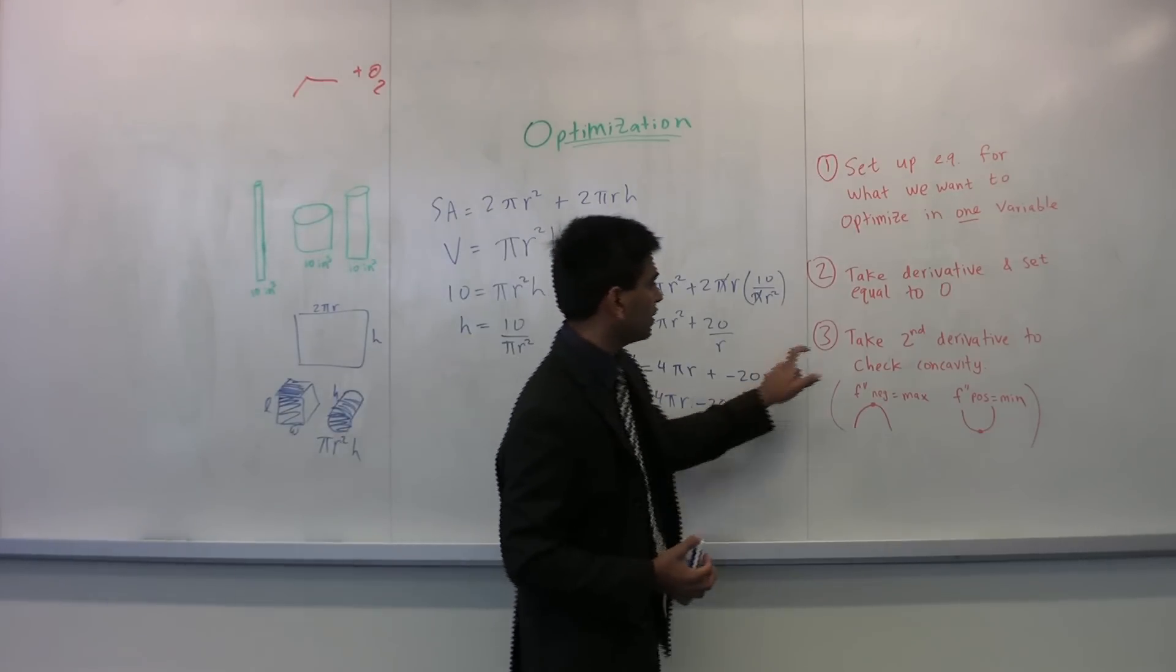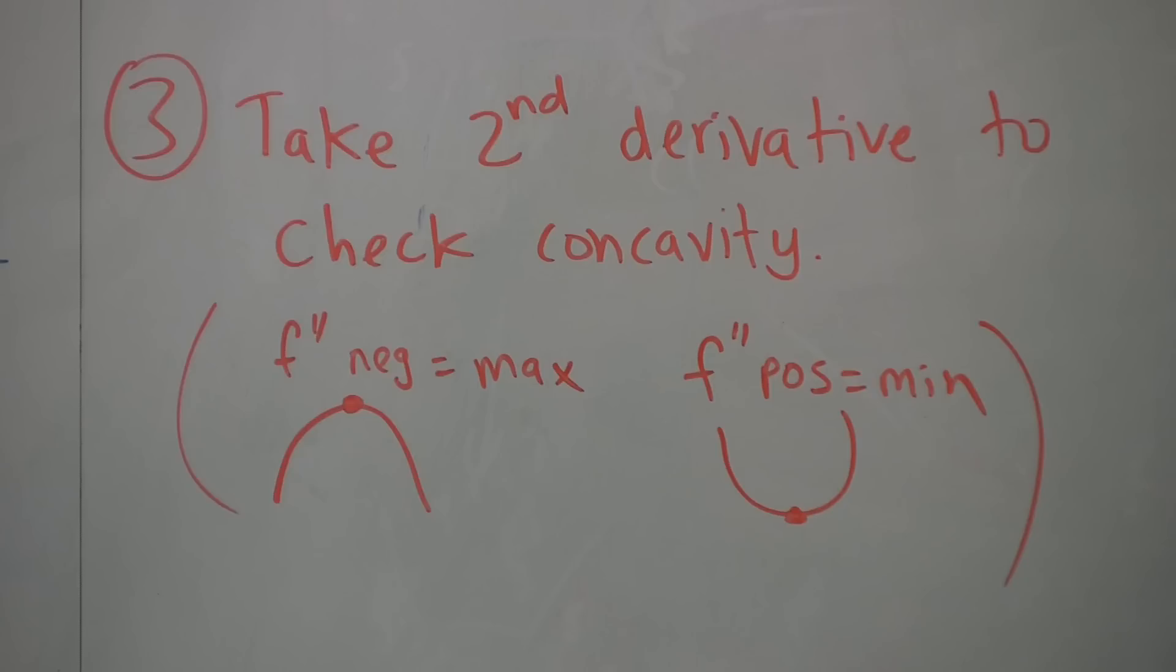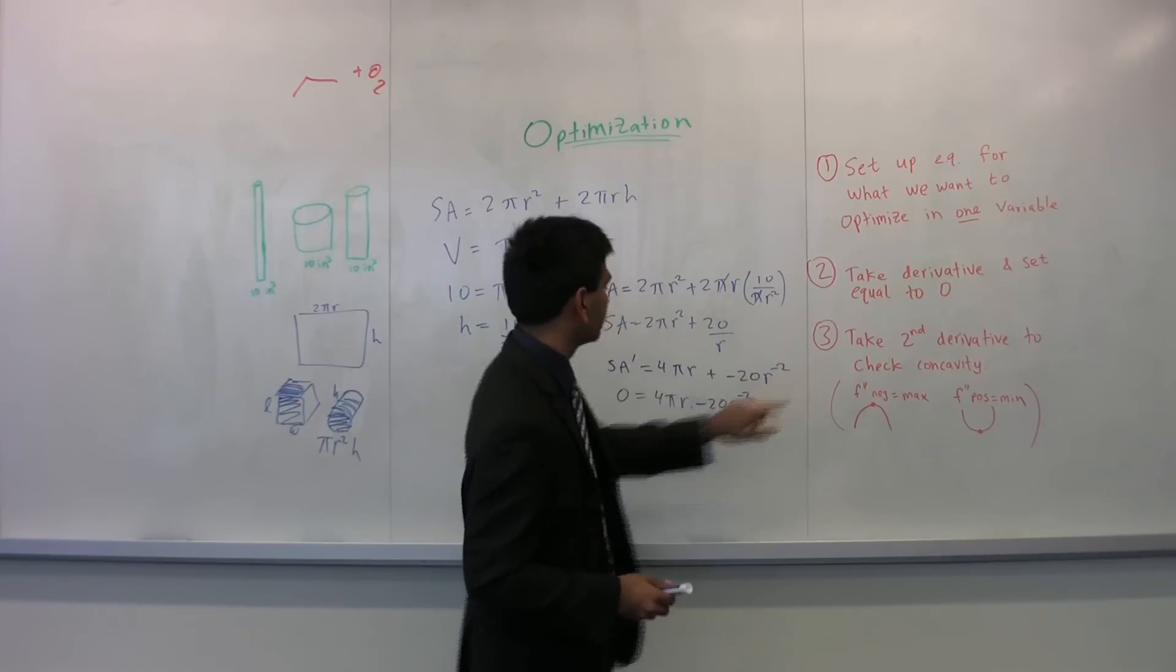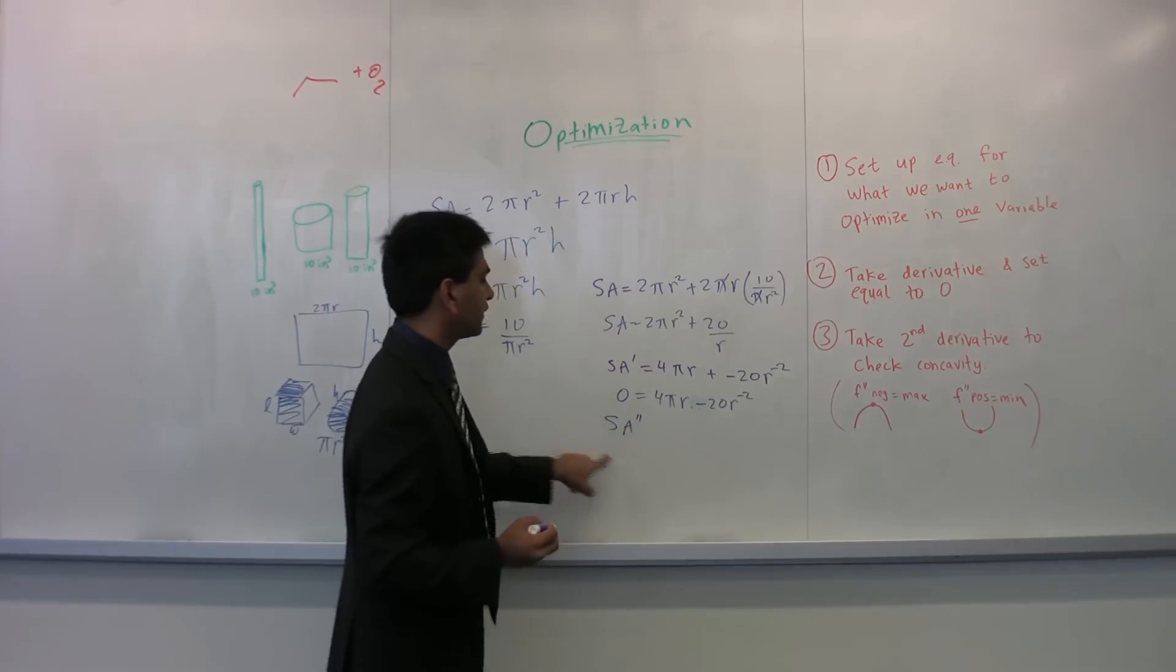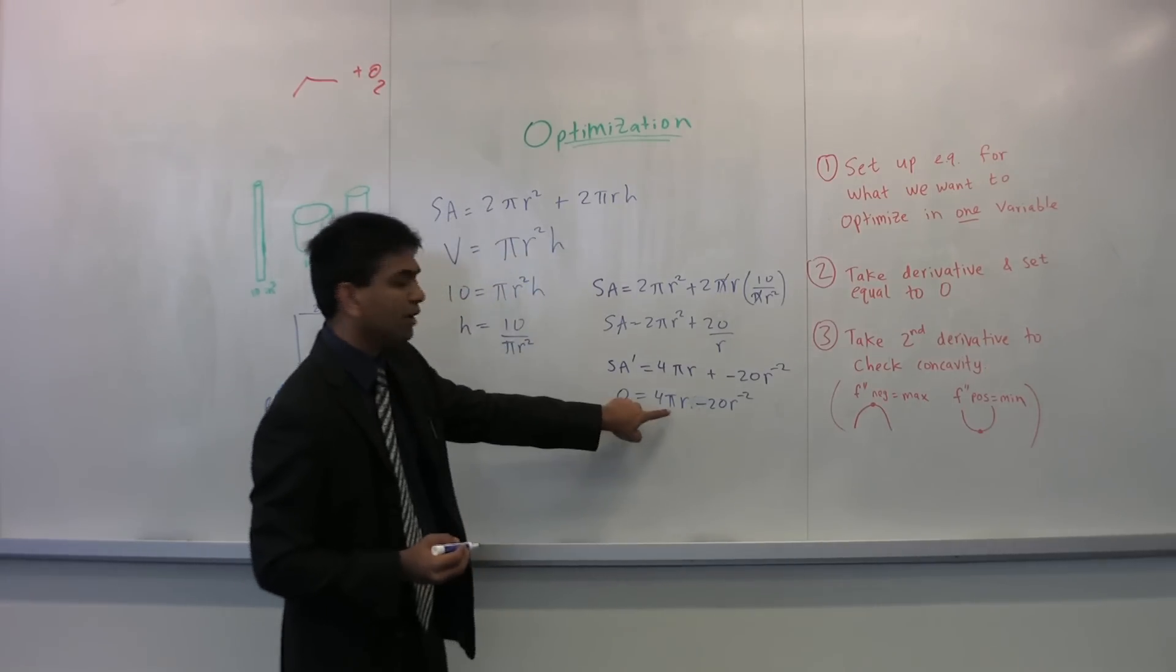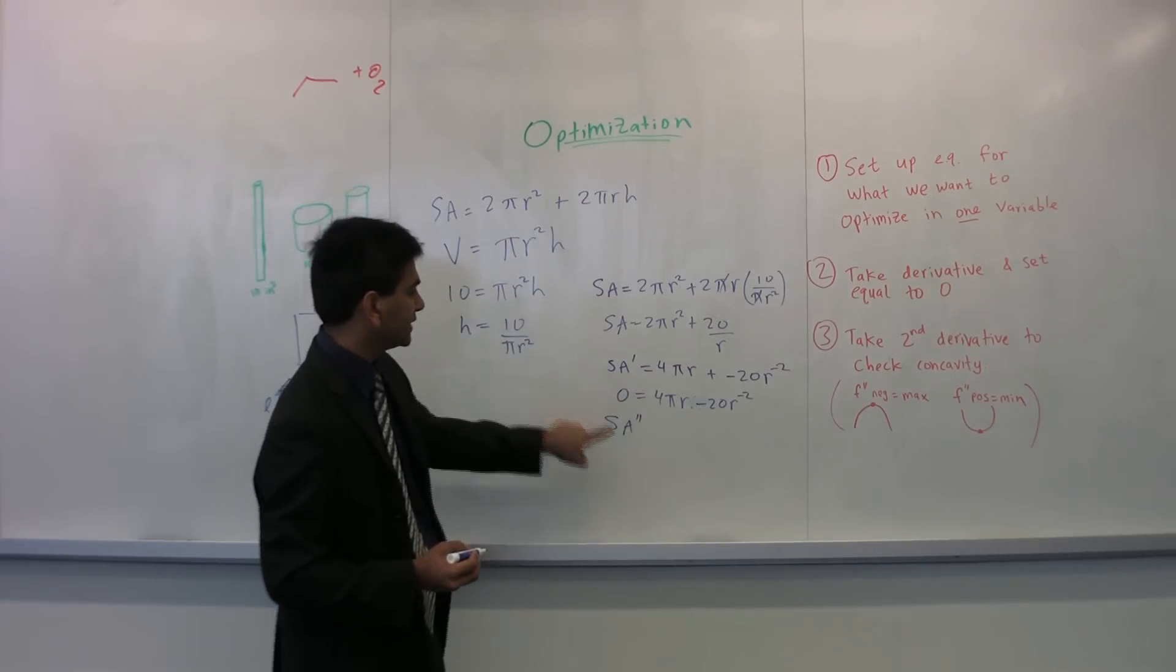Now one thing, though, our last step is you have to check to make sure that you didn't maximize it instead of minimizing it. So, just to check whether your optimal value is actually the max or the min, you actually just look at the second derivative of this guy. So you would just take S a double prime, you can just figure out what that is, and use the r value that you got over here, plug that in.